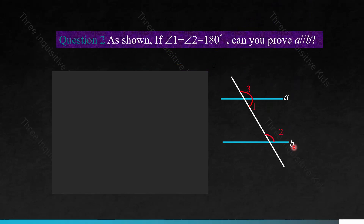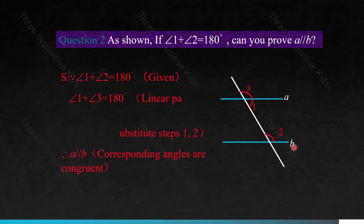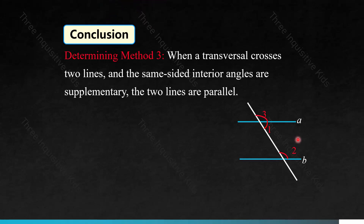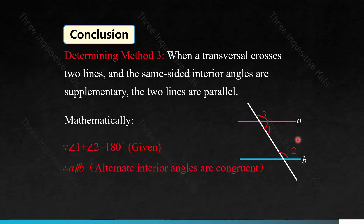As shown, if angle 1 plus angle 2 equals 180 degrees, can you prove that a is parallel to b? Because angle 1 plus angle 2 equals 180 degrees (given), and angle 1 plus angle 3 equals 180 degrees (linear pairs), then angle 2 equals angle 3 by substitution. Therefore, a is parallel to b because corresponding angles are congruent. Conclusion: when a transversal crosses two lines and the same-side interior angles are supplementary, the two lines are parallel. Mathematically, if angle 1 plus angle 2 equals 180 degrees, then a is parallel to b.